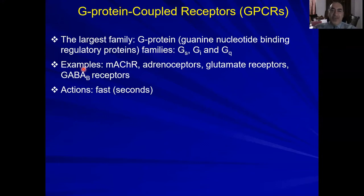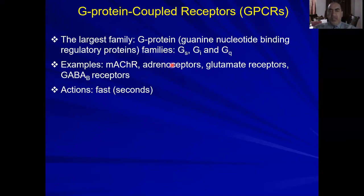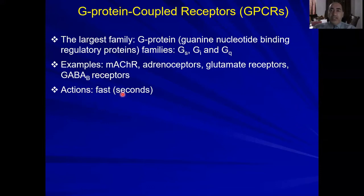It's a huge family. In ligand-gated channels we have nicotinic acetylcholine receptors; in G-protein coupled receptors we have muscarinic acetylcholine receptors. The entire sympathetic nervous system — adrenergic receptors alpha-1, alpha-2, beta-1, beta-2, beta-3 — are all G-protein coupled receptors. Glutamate receptors and GABA-B receptors are also GPCRs. Remember: GABA-A is a ligand-gated ion channel; GABA-B is G-protein coupled. Ligand-gated ion channels are the fastest ones.